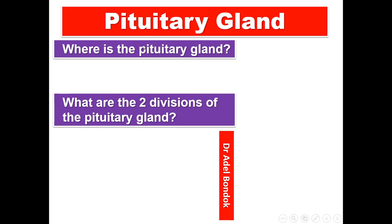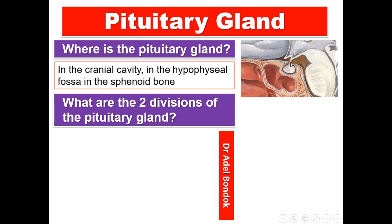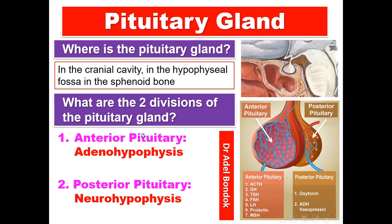Regarding the pituitary gland: where is it and what are its two divisions? The pituitary gland is located in the cranial cavity, in the hypophysial fossa, which is present in the sphenoid bone. This pituitary gland is divided into two parts: the anterior pituitary (adenohypophysis) and the posterior pituitary (neurohypophysis). The anterior pituitary secretes seven hormones; the posterior pituitary secretes two hormones.